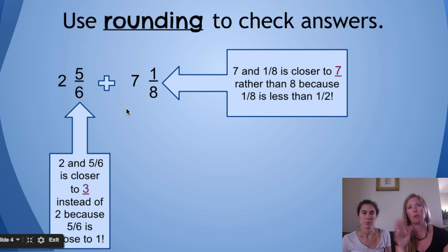So, again, if you think about those benchmarks to some degree, five-sixths is really close to one. So, I'm going to round that up. It's a lot closer to, so since I had two wholes, two and five-sixths would be closer to the next whole, which would be three. So, I'm just rounding this up to three.